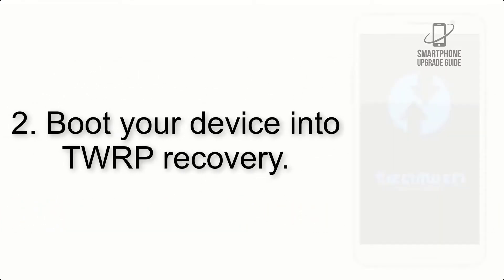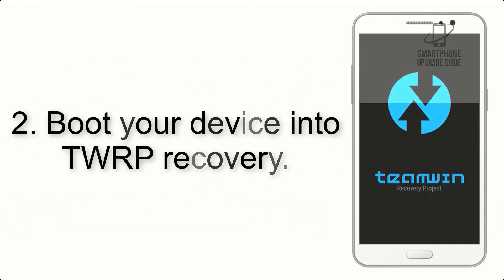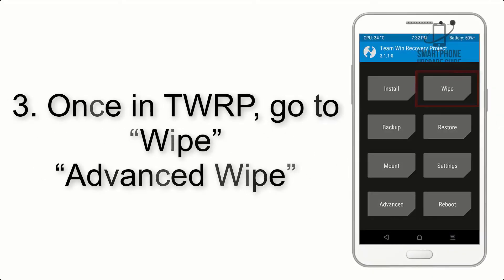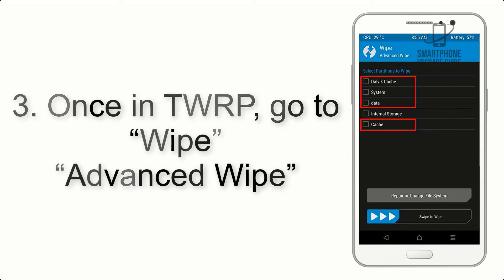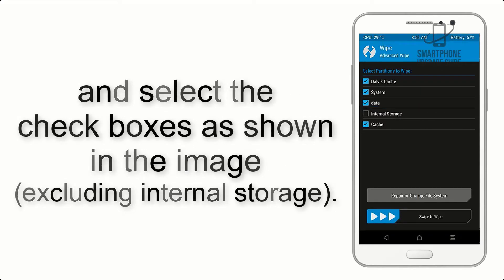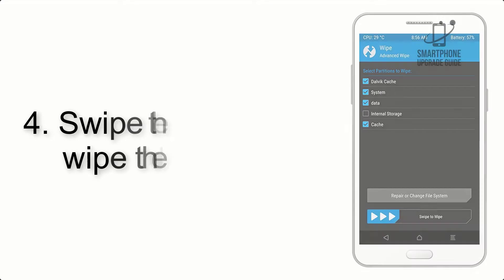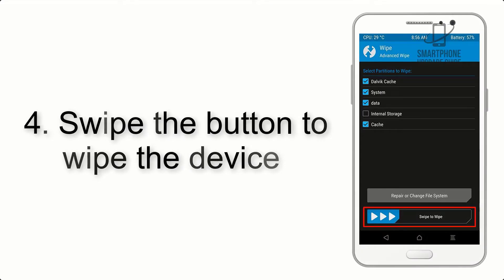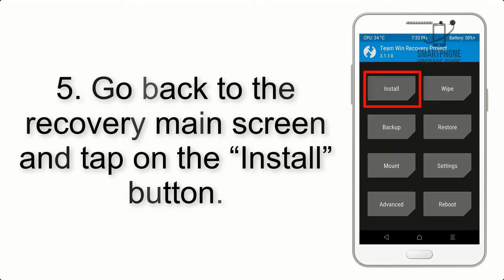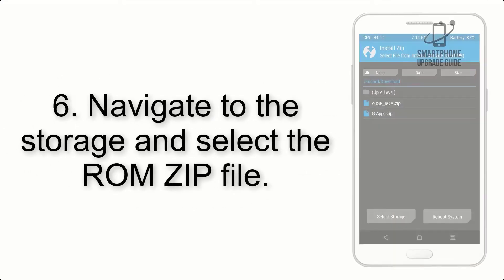Step 2: Boot your device into TWRP recovery. Once in TWRP, click on Wipe, then Advanced Wipe, and select the checkboxes as shown in the image, excluding internal storage. Step 4: Swipe the button to wipe the device. Step 5: Go back to the recovery main screen and tap on the Install button.